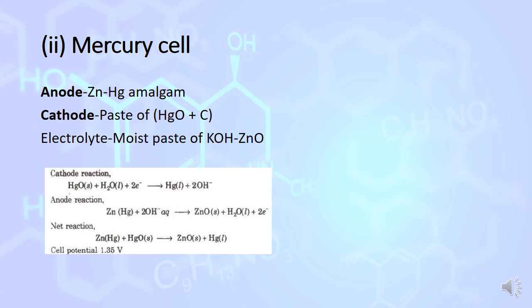Another example of primary cell: anode is made up of zinc mercury amalgam and cathode is paste of HgO and carbon. Electrolyte uses small paste of KOH and ZnO.